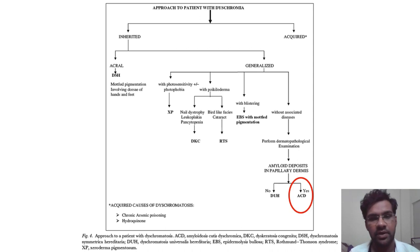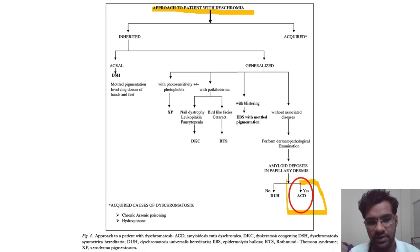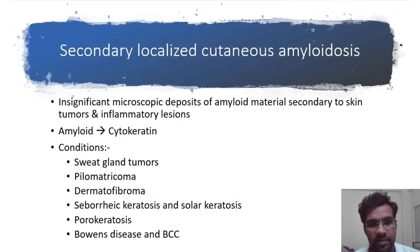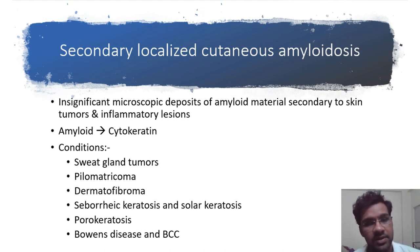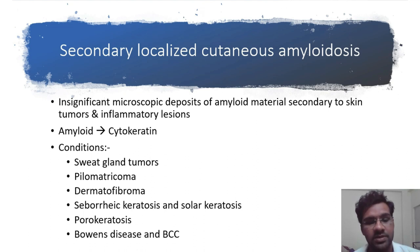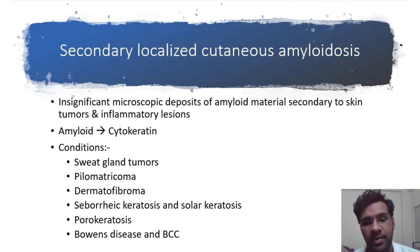This slide shows the approach to a patient with dyschromia, and through this pathway we find amyloidosis cutis dyschromica. Secondary localized cutaneous amyloidosis has an underlying cause — either skin tumors or inflammatory lesions — causing deposition of insignificant microscopic deposits of amyloid into the tissue. The most common amyloid type is AK type derived from cytokeratins. Most common associated conditions are sweat gland tumors, pilomatricoma, dermatofibroma, seborrheic keratosis, stucco keratosis, porokeratosis, Bowen's disease, and basal cell carcinoma.